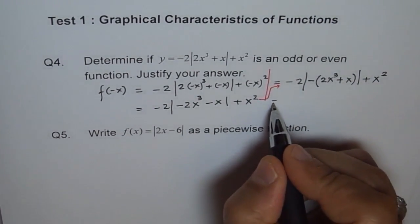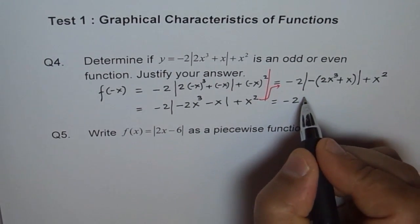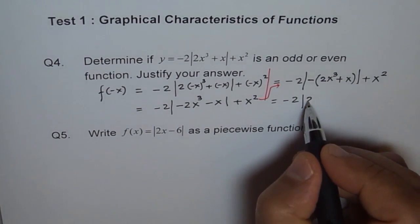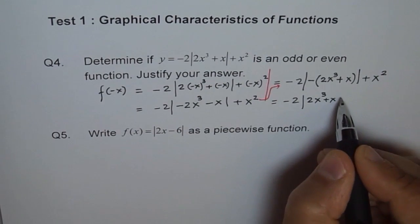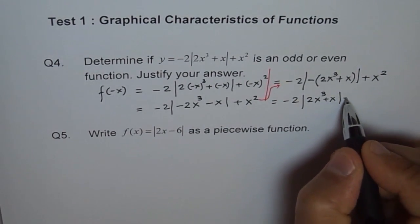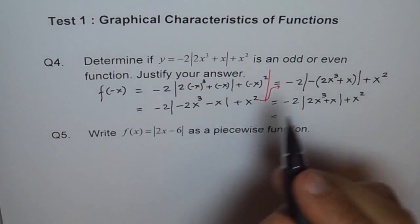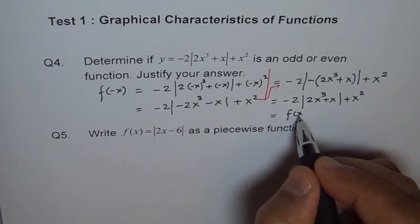And this is equal to minus of, absolute value of minus is always positive. So we get 2x³ + x + x², right? This is same as our function f(x), correct?